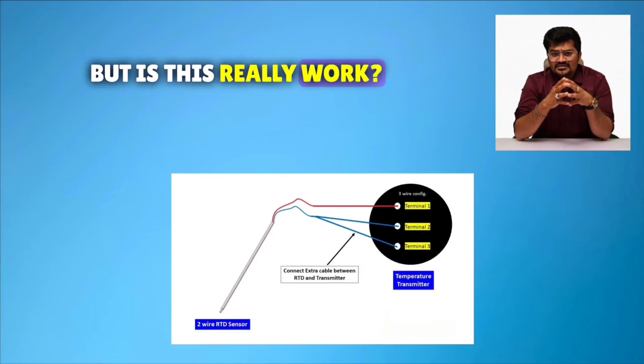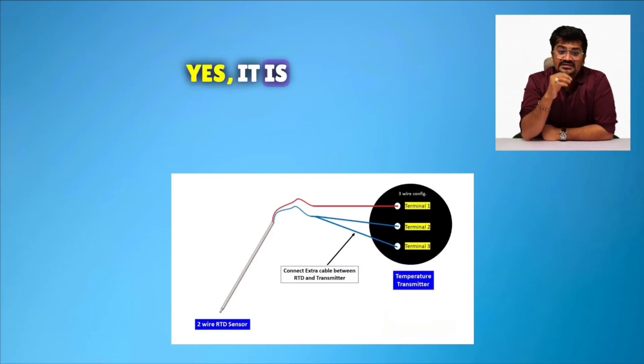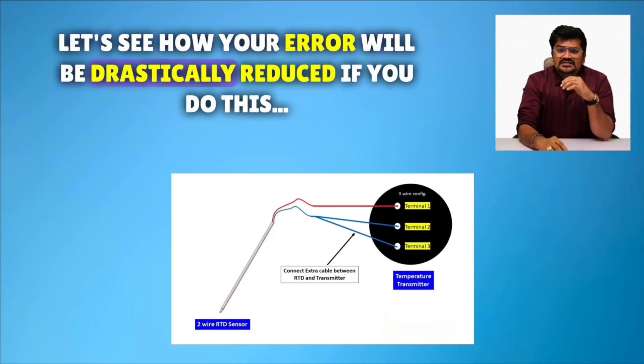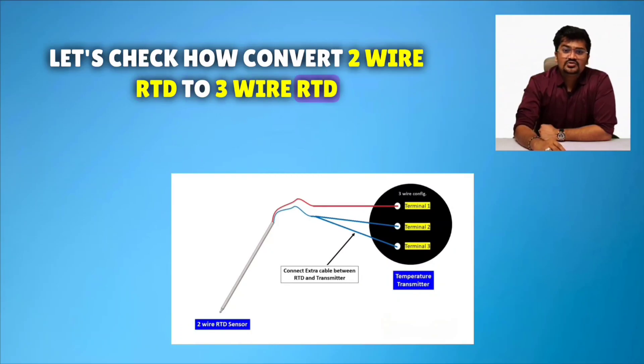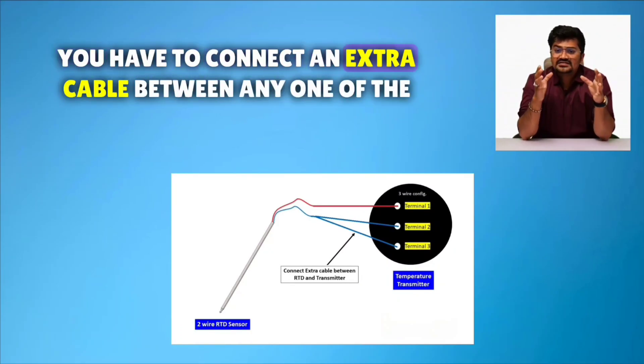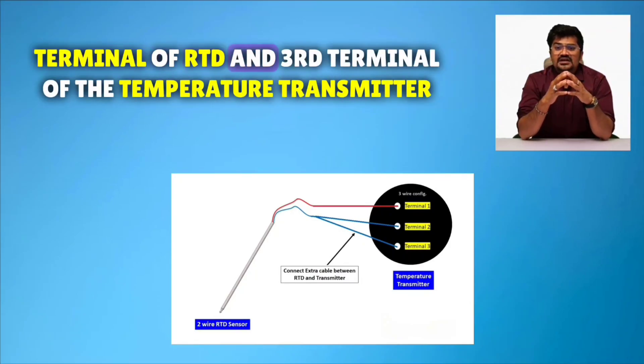But is this really work? Yes, it is. Your error will be drastically reduced if you do this. To convert 2-wire RTD to 3-wire RTD, you have to connect an extra cable between any one of the terminal of RTD and 3rd terminal of the temperature transmitter.